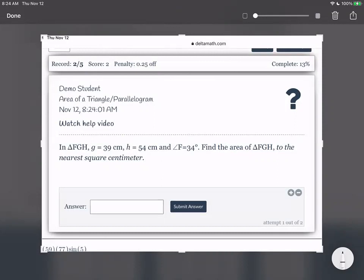We're going to find the area to the nearest square centimeter. Just draw some generic triangle. Label it FGH. G is 39. So that side length is 39. That's supposed to say centimeters. And then H is 54 centimeters. So go across from the letter H. This is 54 centimeters. And angle F is 34. So that's right over here. That's 34 degrees.